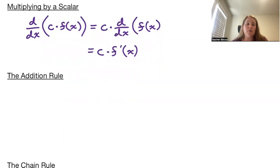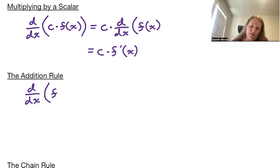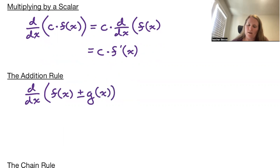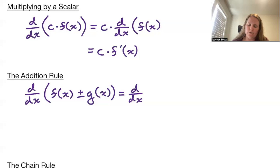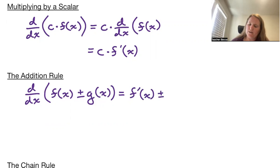Next up, we have our addition rule. If we wish to take the derivative of a function f of x plus or minus a function g of x, this is equivalent to taking the two derivatives separately and then either adding or subtracting them. Using prime notation, we are looking at f prime of x plus or minus g prime of x.